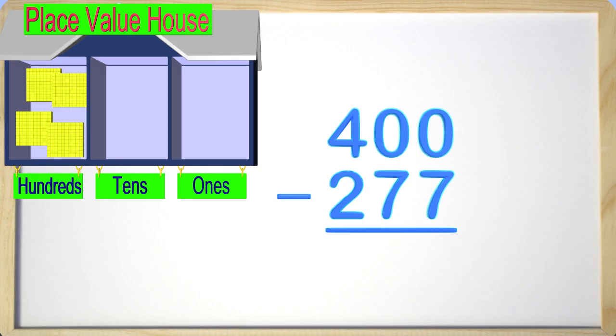Now looking back at the problem, we need to start subtracting in the ones place first. We cannot do this because we cannot take seven away from zero. We need to regroup or borrow from the tens place to be able to subtract. What number is in the tens place? Zero! Right! So let's borrow from the zero. Wait a minute! We can't do that. We cannot borrow from a zero.